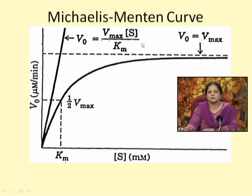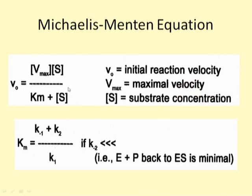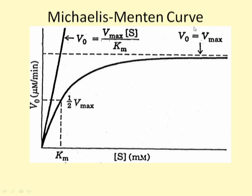This is first-order reaction kinetics seen at very low substrate concentrations. At high substrate concentrations — when S is much greater than Km — we can ignore Km in the denominator, and the equation becomes V0 equals Vmax times S over S, or simply V0 equals Vmax. This explains zero-order kinetics at high substrate concentrations. In between, the full equation is obeyed.